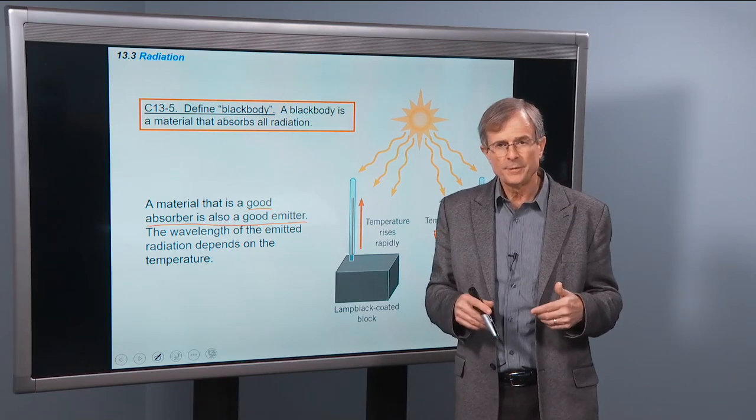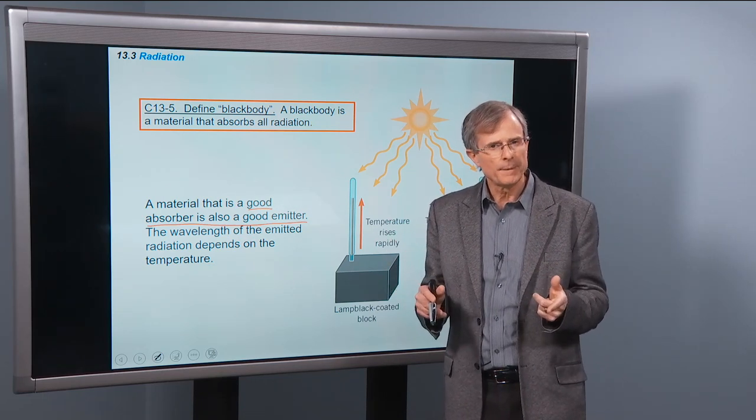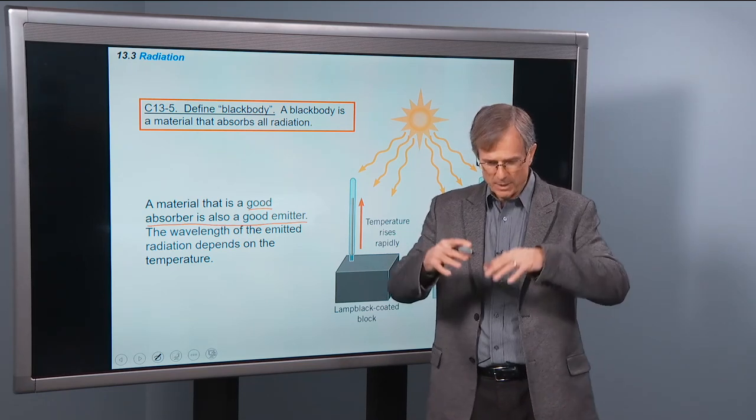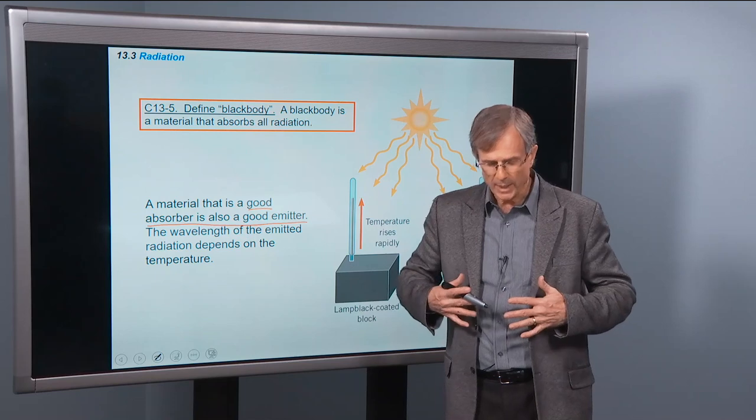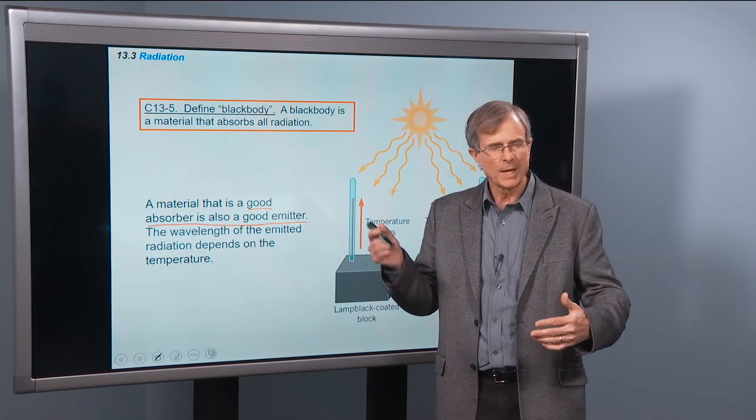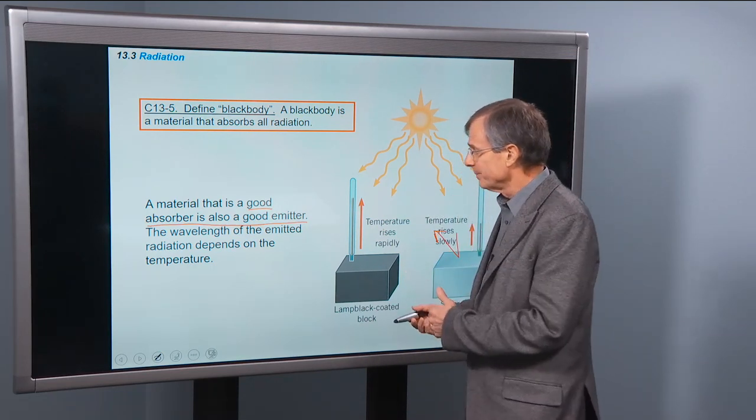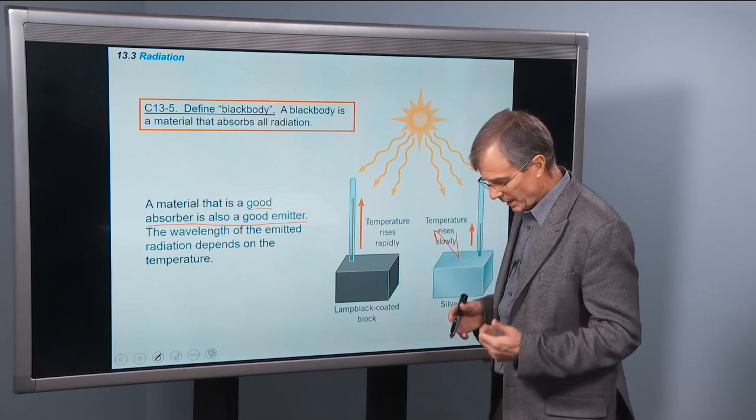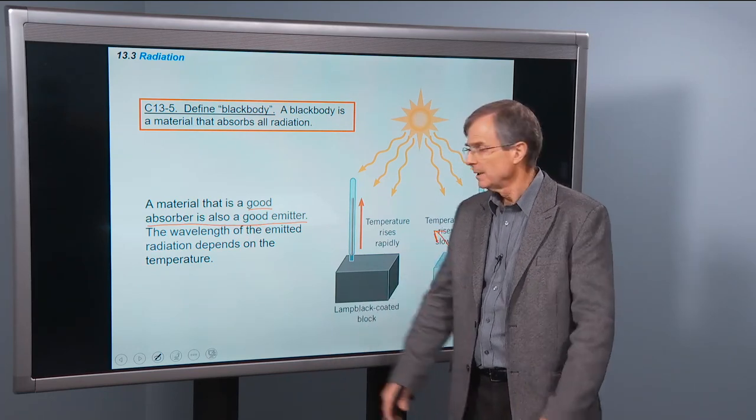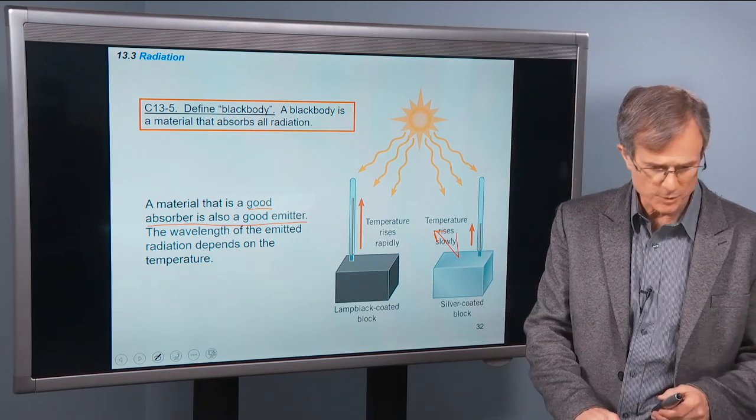What's a good example of radiation? If you're in a tent, a small tent especially, that tent is going to warm up. Why? Your body is at a higher temperature than the tent and surroundings, and your body radiates energy in the form of infrared rays. A good absorber is also a good emitter. Black colored pants absorb well but also emit light well. The wavelength of the emitted radiation depends on the temperature.